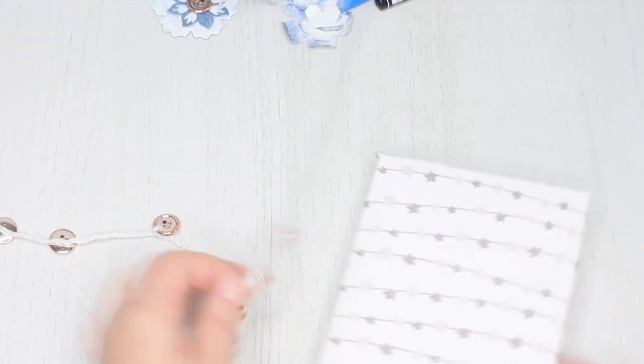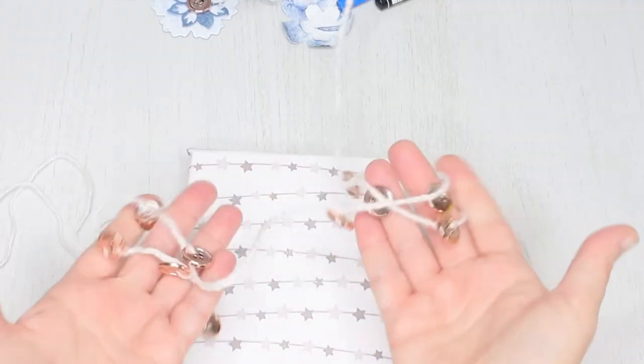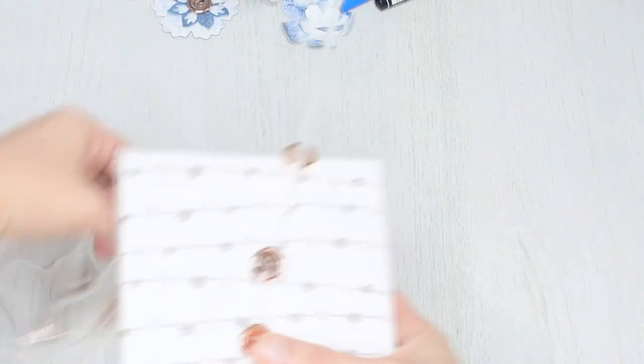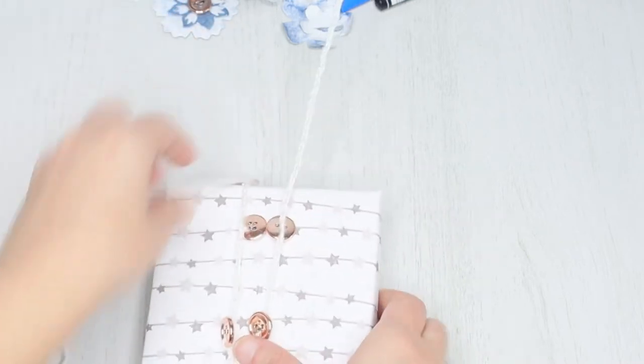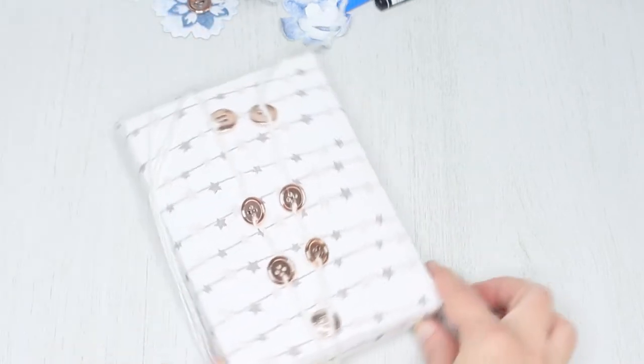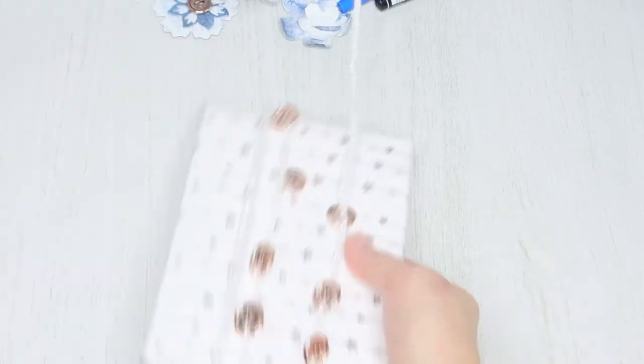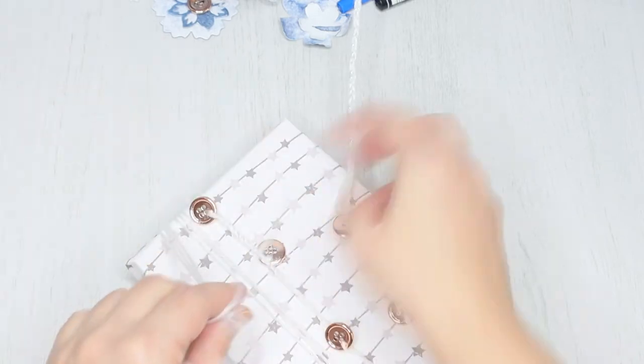The garland will be wrapped around the gift so it's okay if you want to test it and see if you want to add more buttons or not. Also if you want you can ignore the back side of the gift and just do a simple braid without buttons if you wish to have buttons only on the front side of your gift. You just need to leave more space between the buttons.